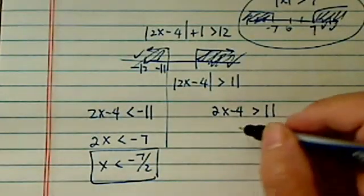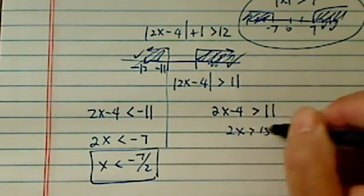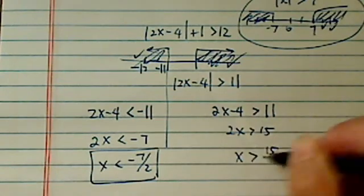On this side, I'm going to add 4 on both sides. I have 2x bigger than 15, where x is bigger than 15 over 2.